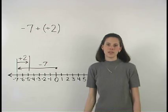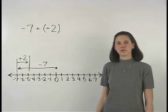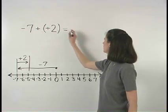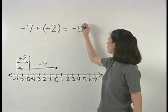So negative 7 minus negative 2 or negative 7 plus positive 2 equals negative 5.